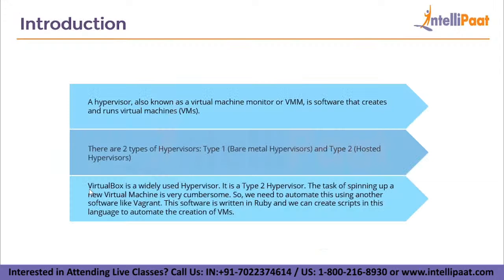Some key facts about hypervisors: a hypervisor is also known as a Virtual Machine Monitor, or VMM. It is software that creates and runs virtual machines. There are two types of hypervisors — Type 1, also called bare metal hypervisors, and Type 2, also called hosted hypervisors. VirtualBox is a widely used hypervisor provided by Oracle. It is a Type 2 hypervisor.